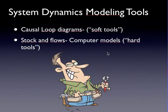There are two main system dynamic tools, the soft tools and the hard tools. Soft tools are causal loop diagrams and the hard tools are the computer models that are based on stock and flow diagrams.